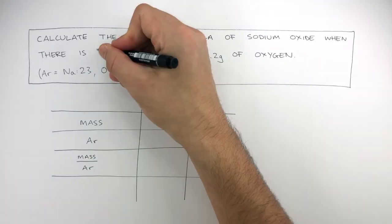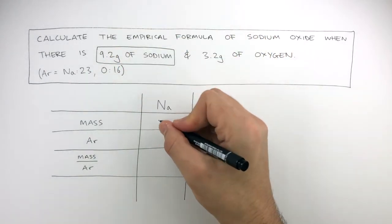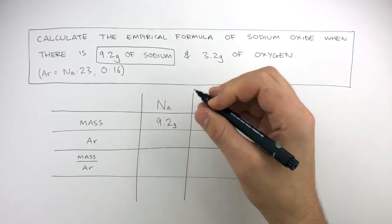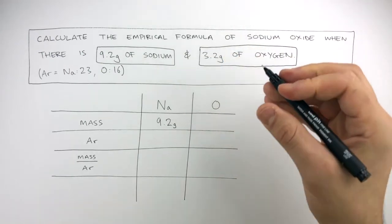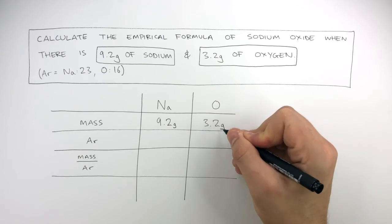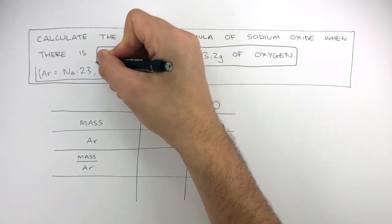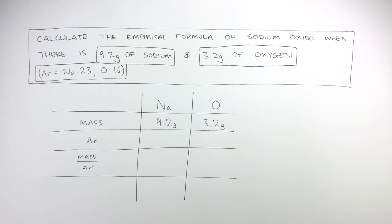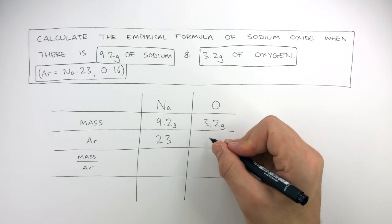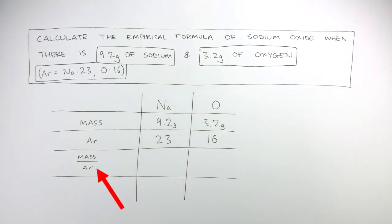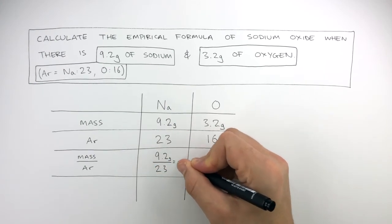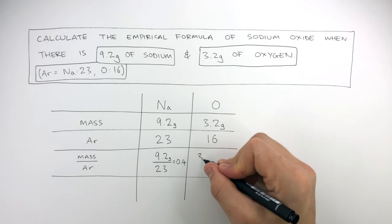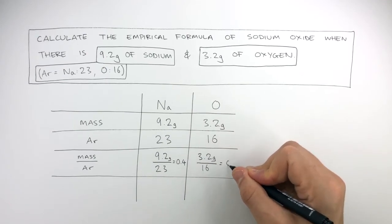The question tells us there is 9.2 grams of sodium, so in our table we write 9.2 grams in the row where mass and sodium meet. The question tells us there is 3.2 grams of oxygen, so we also write 3.2 grams. The relative atomic mass of sodium is 23, and the Ar of oxygen is 16. The next step is mass divided by Ar for each element. For sodium, we do 9.2 divided by 23, which equals 0.4. For oxygen, we do 3.2 divided by 16, which equals 0.2.